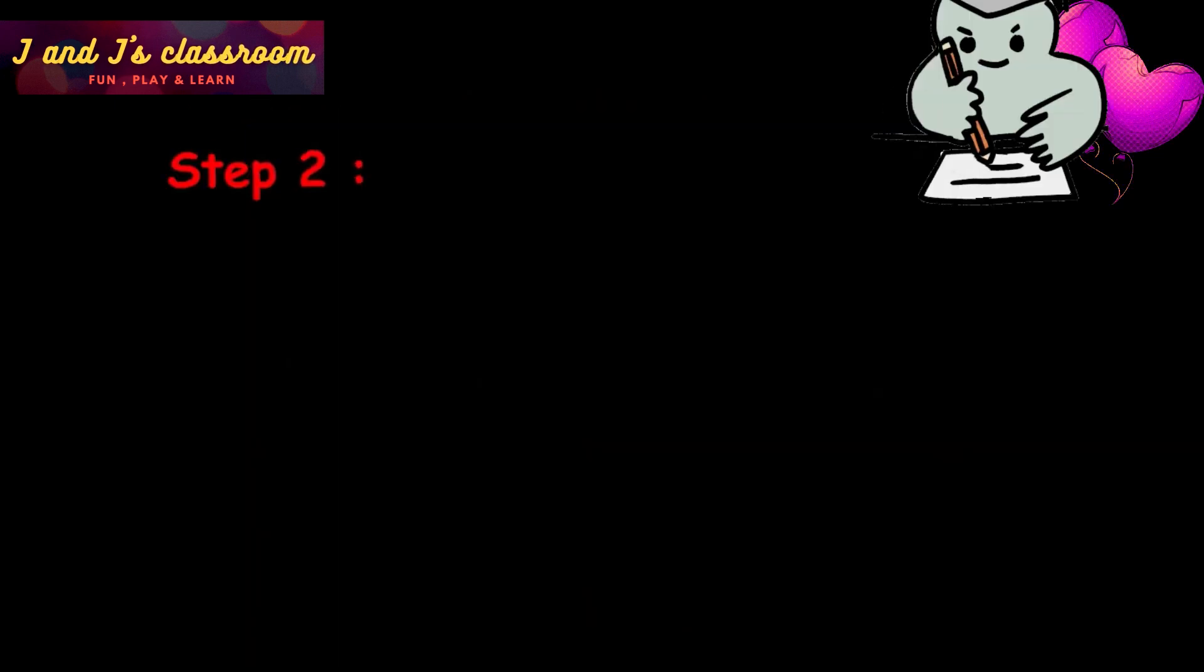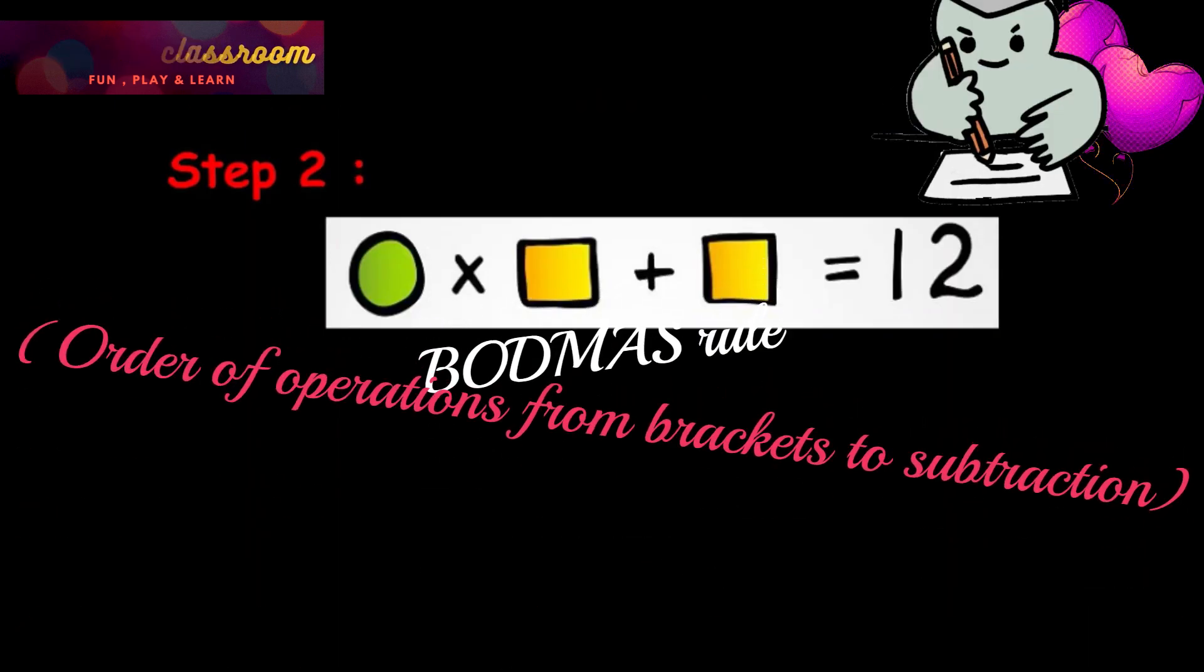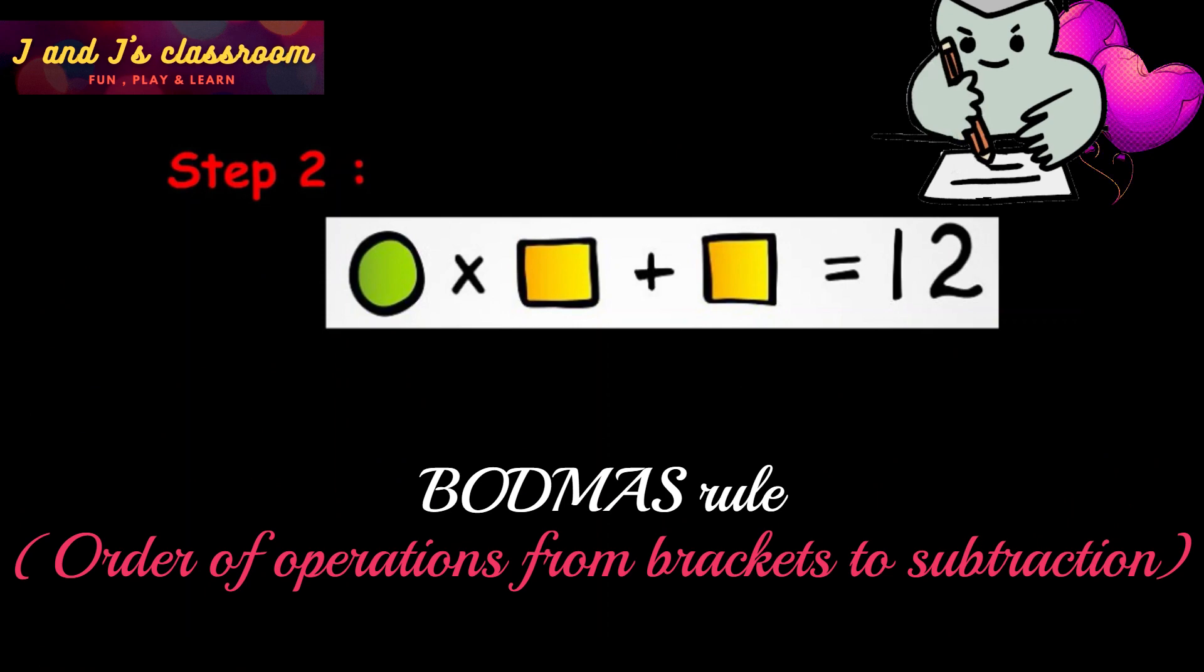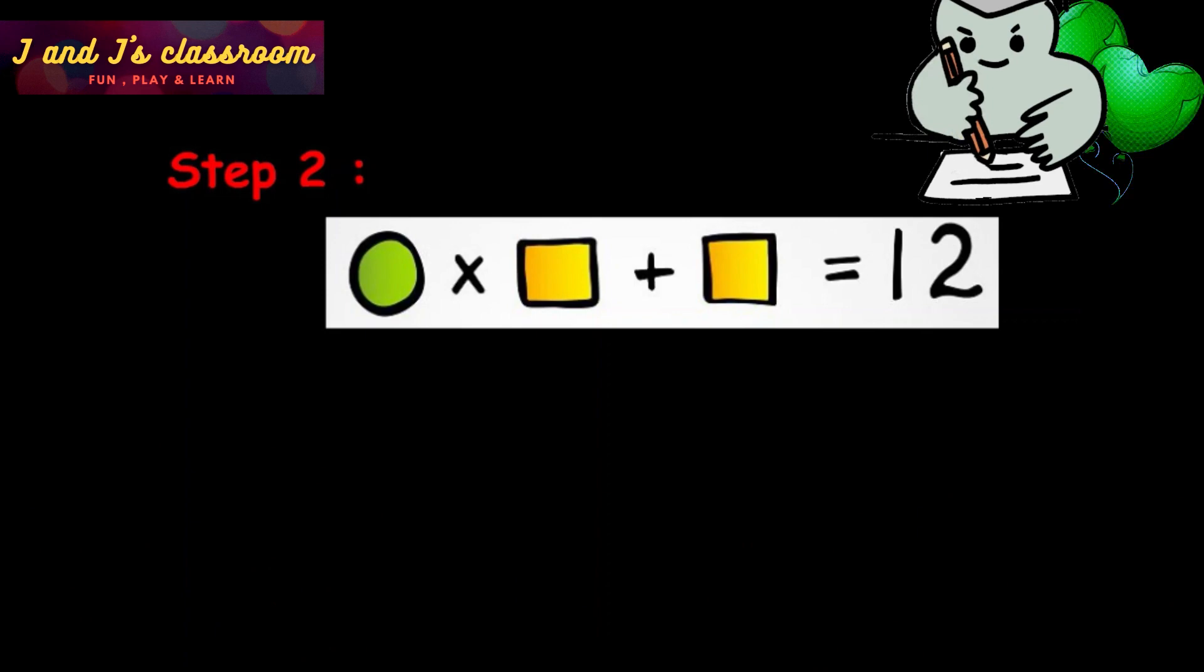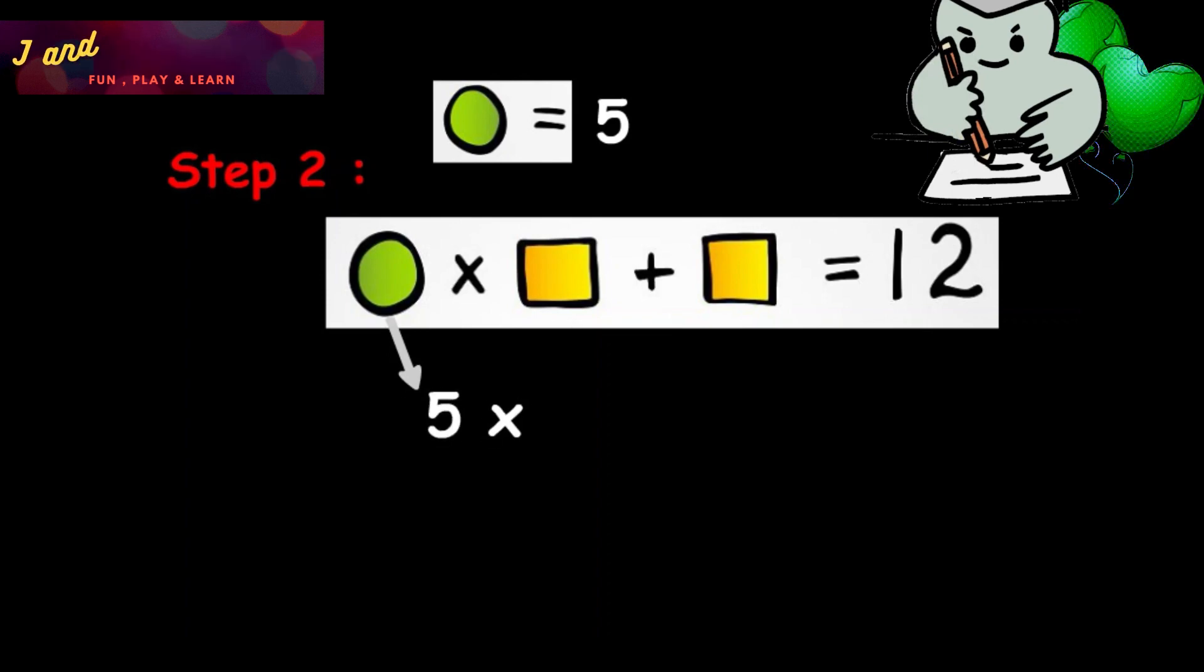Step 2: According to the BODMAS rule, the meaning of step 2 is, when we add a square with the product of a circle and square, then we get the result is 12. Already we found the value of circle, that is 5. Now apply the value of circle. Next we are going to find the value of square. So, let me assume a number from 1 and check with the square.